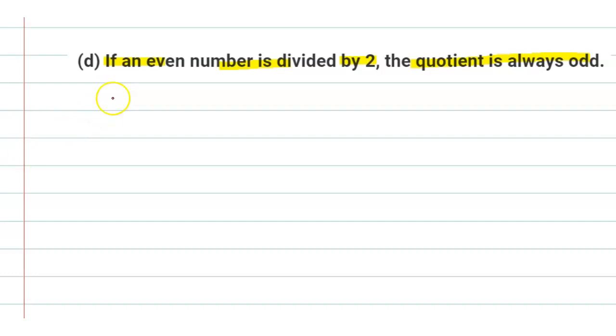First, we will write what is an even number. Even numbers are those numbers which are divisible by 2, like 2, 4, 8, 10, 12, and so on.